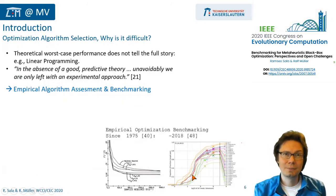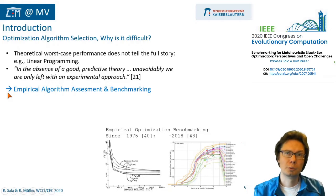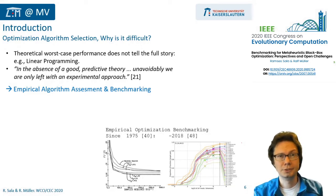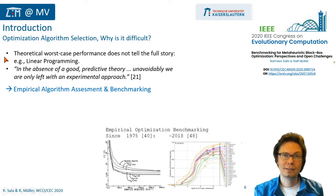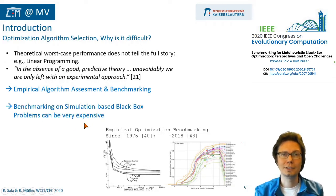Second, this matching of which algorithm performs well on what problem typically requires empirical benchmarking. Because for most non-trivial problems and algorithms, there are no theoretical methods available to estimate the average algorithm performance or the performance distributions. Theoretical methods are often okay for worst-case analysis, but if you want to go beyond that, you basically just have to test it by trying it out. And that can take a lot of effort and computational resources.